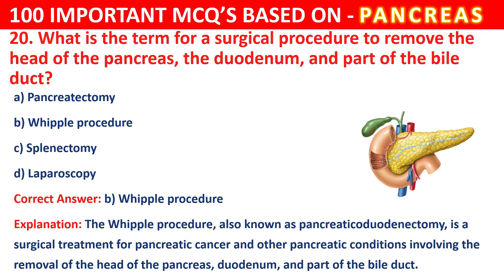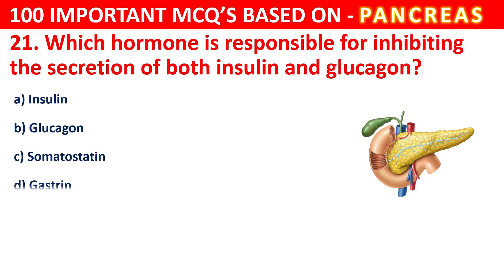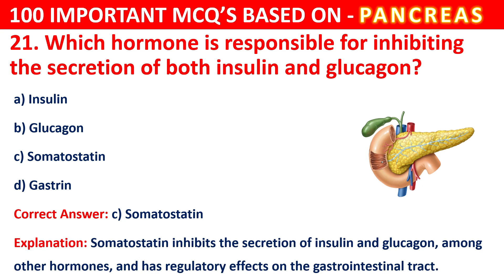Question 21. Which hormone is responsible for inhibiting the secretion of both Insulin and Glucagon? Your options are Insulin, Glucagon, Somatostatin, or Gastrin. The correct answer is Somatostatin. Somatostatin inhibits the secretion of Insulin and Glucagon, among other hormones, and has regulatory effects on the gastrointestinal tract.